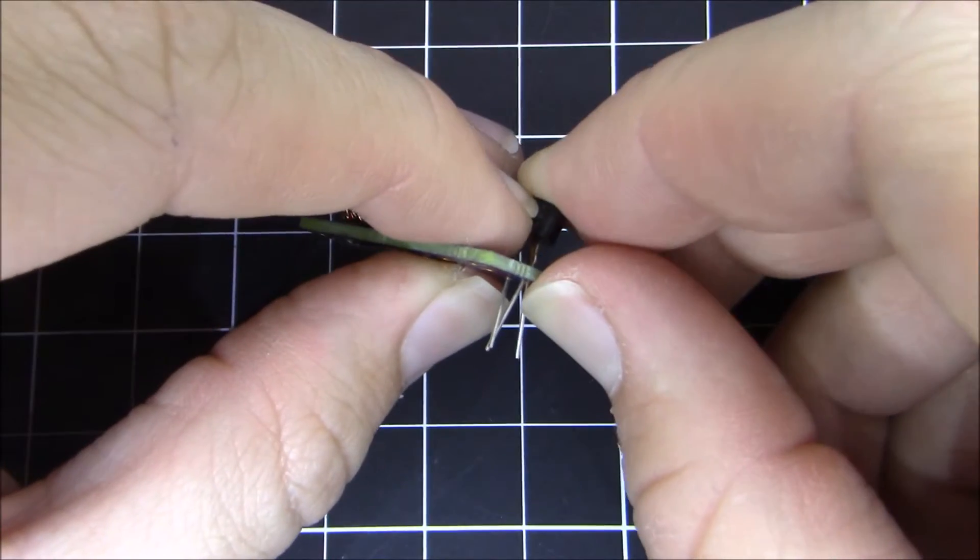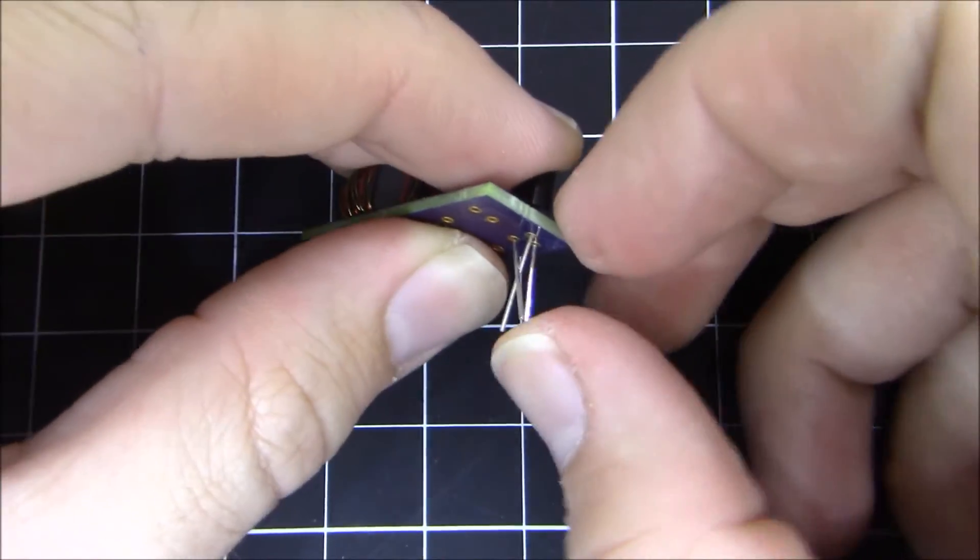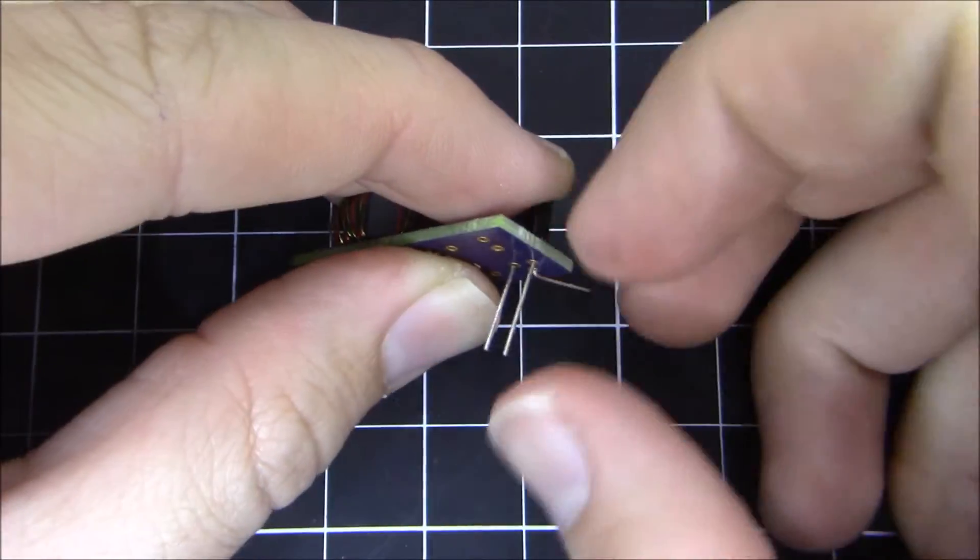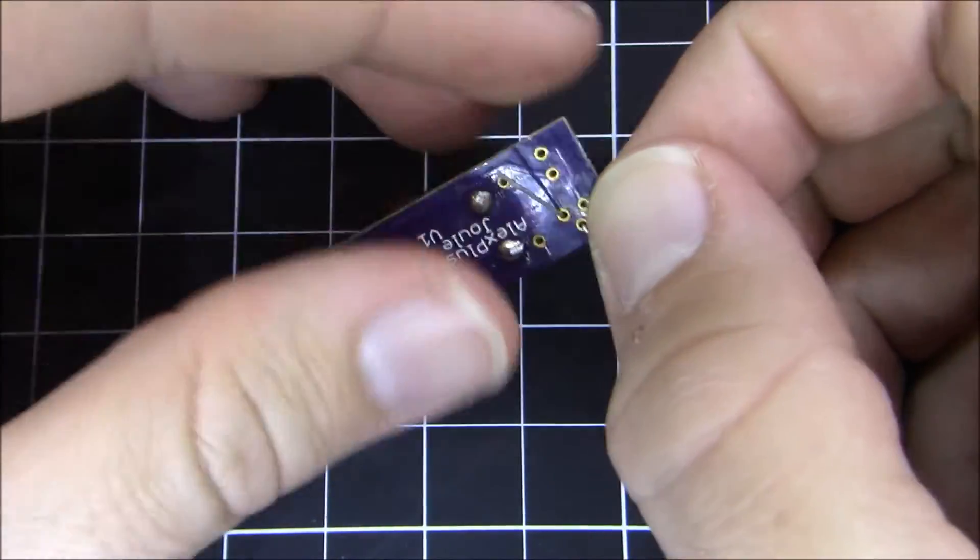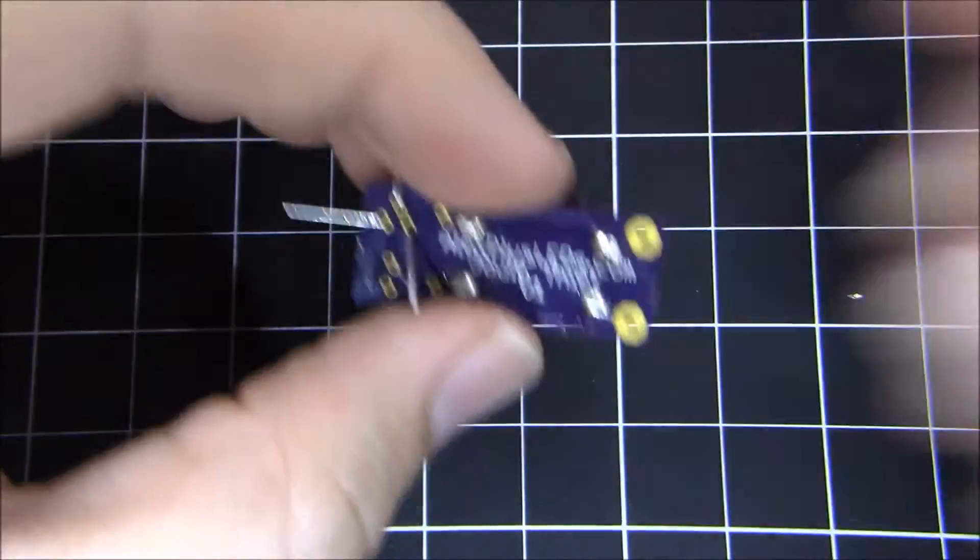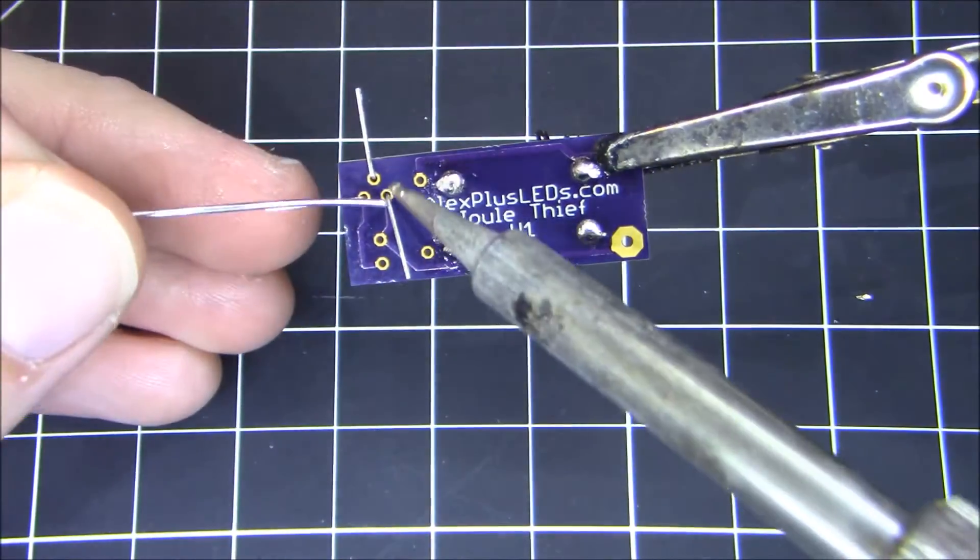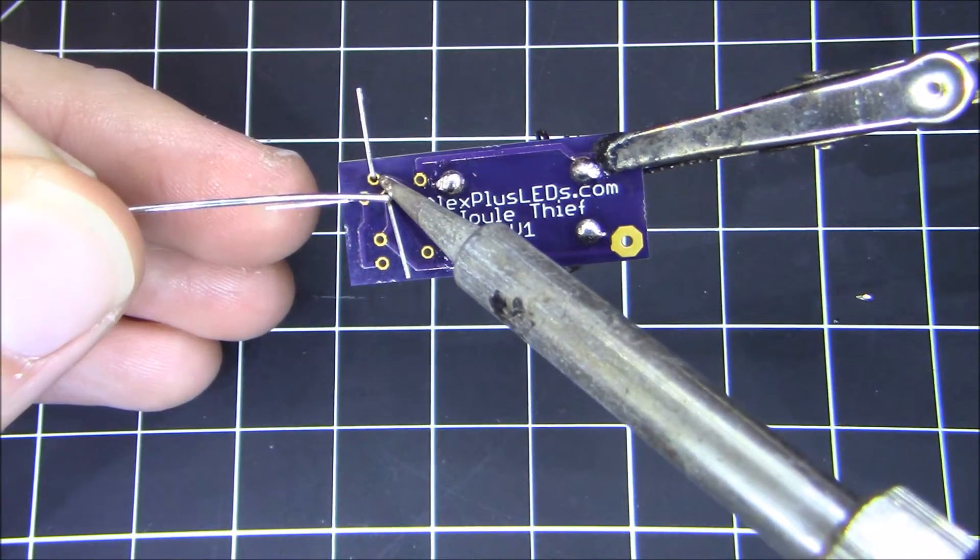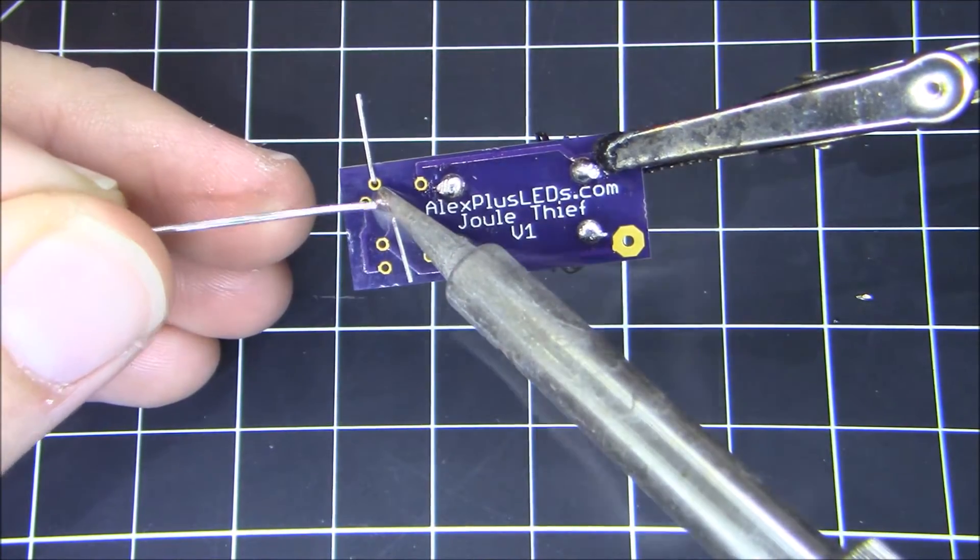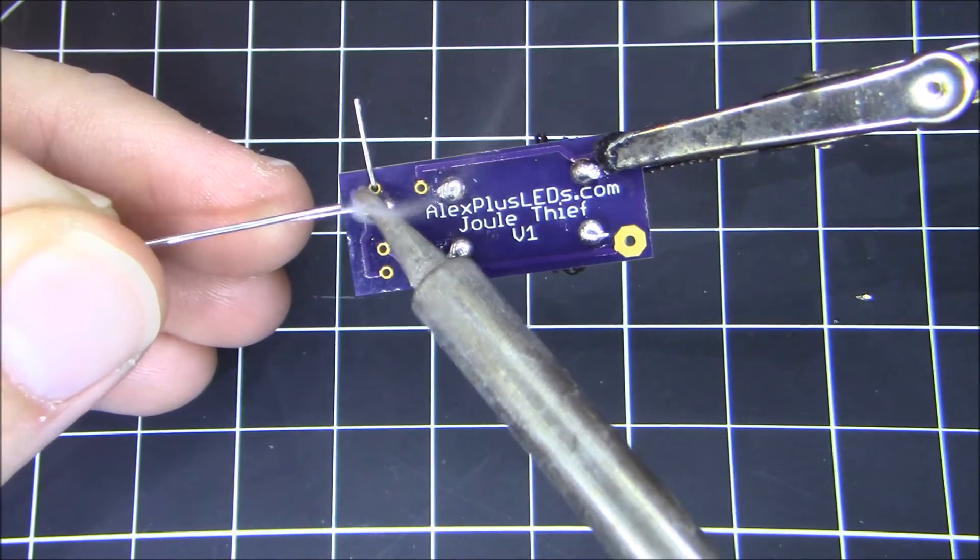Push it all the way through and then bend the leads of the transistor out of the way so you can get your soldering iron to solder all those. And clamp it in your helping hands and solder away. Make sure you do this quickly because the transistor is sensitive to heat. You don't want it to get damaged.